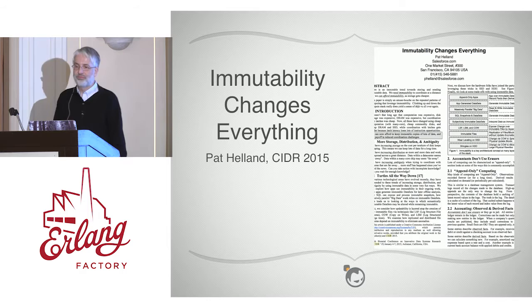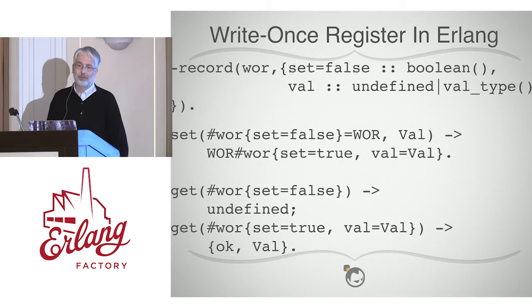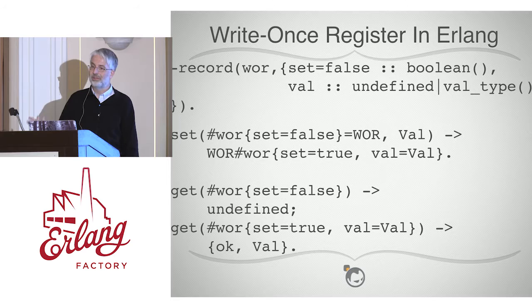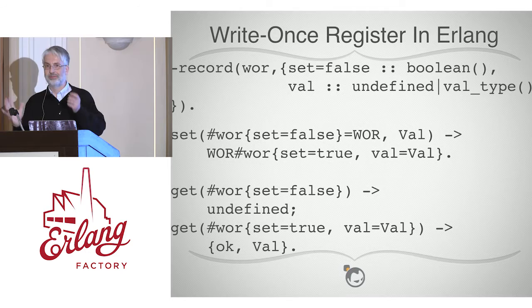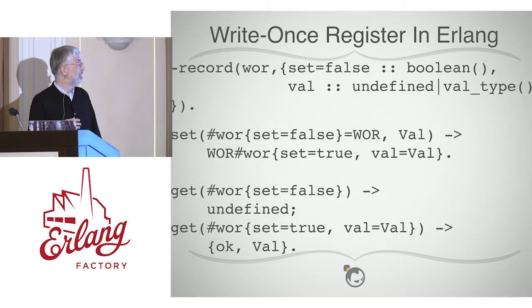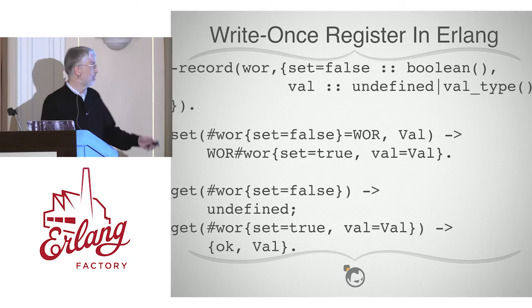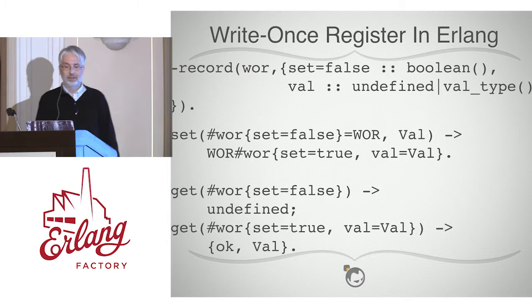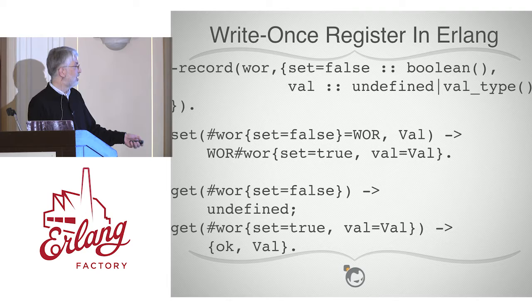If we wanted to model a write-once register in Erlang, we have a write-once register record with a couple of elements: a Boolean indicating whether the value is set, and then a value that's either undefined or some application-specific type. We intentionally crash if we try to set a register that's already set — that's why we have a guard for false with no corresponding clause for true. On get, we return undefined or an OK wrapper tuple for the value.